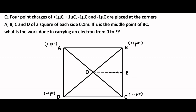E is the midpoint. The side is 0.1 meter. Since it is a square, AB is equal to BC is equal to CD is equal to AD, which equals 0.1 meter.